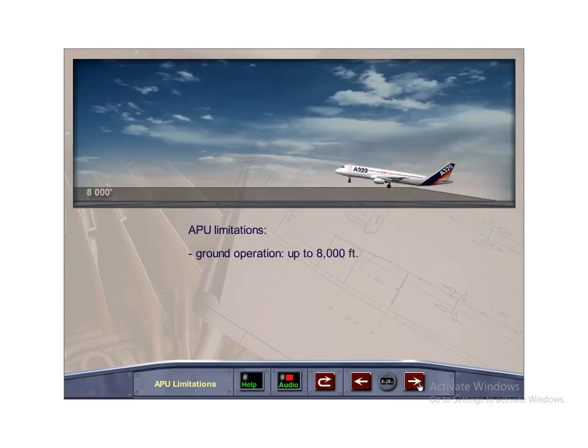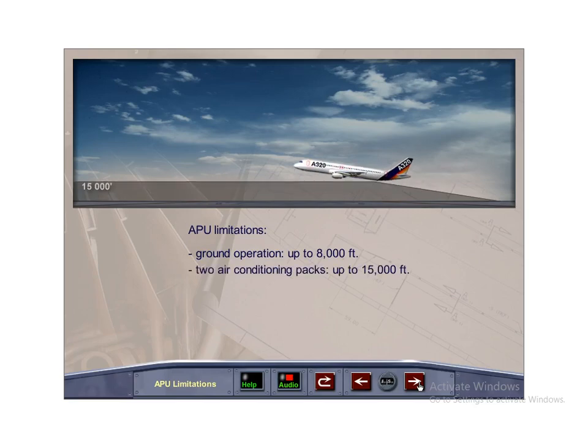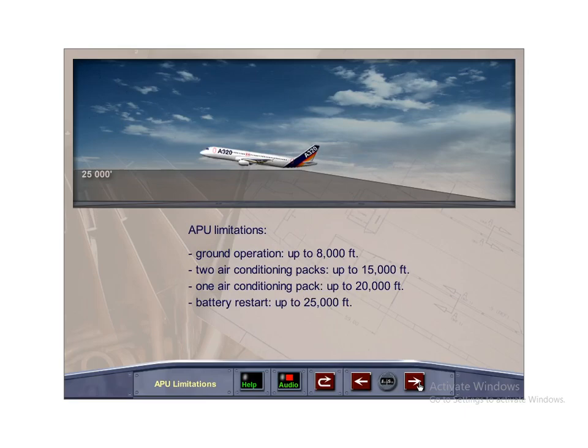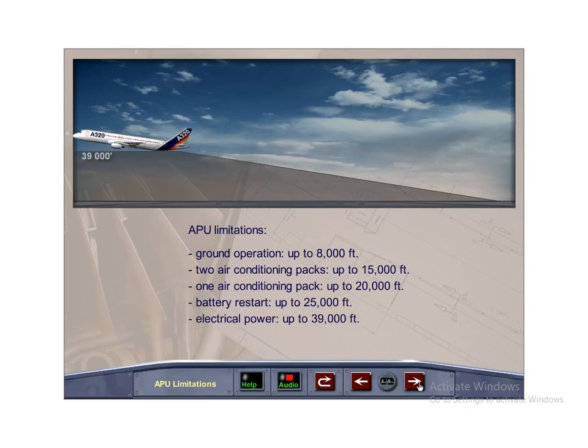The APU can provide electrical power for the entire flight envelope up to 39,000 feet. Ground operation is available up to 8,000 feet. Bleed air extraction for two air conditioning packs is allowed up to 15,000 feet and for one pack up to 20,000 feet. The APU battery restart limit is 25,000 feet.